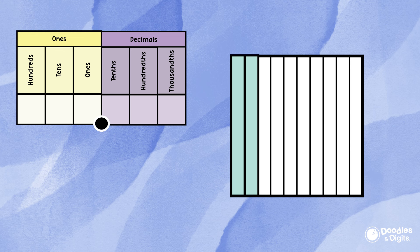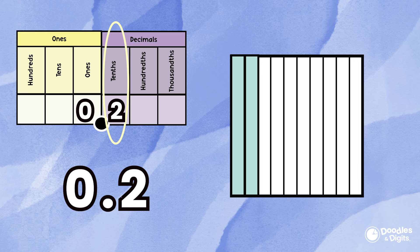First, we're going to determine how many this whole is divided into. It's divided into tenths, so we're going to be writing our number in the tenths place. How many tenths do we have? We have two tenths, so our decimal is 0.2.